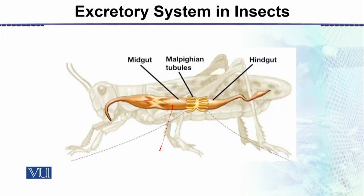In this diagram, we can see that the digestive system and excretory system are associated in this group of animals. There is a mouth, which leads into the esophagus. Then there is a chamber called the crop, followed by a stomach. There are also gastric glands, and then there is the mid-gut, followed by the intestine, which broadly speaking is the hindgut.